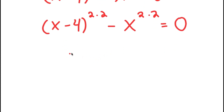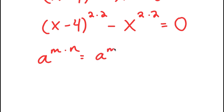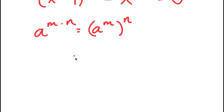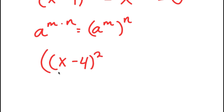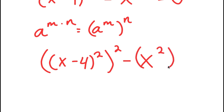If I have something in the form a to the power of m times n, this is equal to a to the power of m to the power of n. So (x − 4) to the power of 2 times 2 equals (x − 4) squared to the power of 2, and then I have minus x squared to the power of 2 is equal to 0.